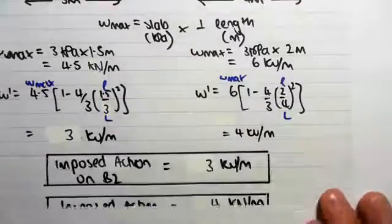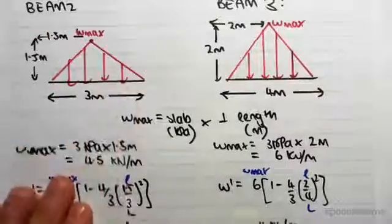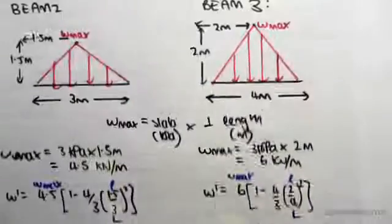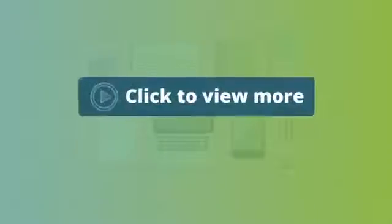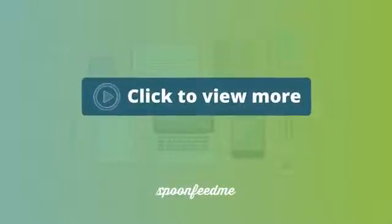So therefore, we can say that the imposed action on B2, this beam over here is 3 kN per meter, and the imposed action on beam 3... the imposed action on B2...